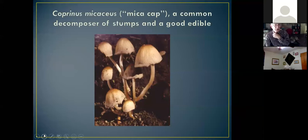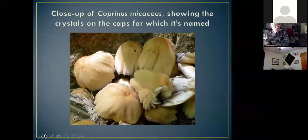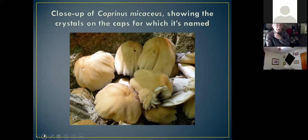Another one in the same genus is a decomposer of stumps and also a good edible — called the microcap because when it's young it has little crystals on it that look like microchips. They too turn black as they age, often making the stump look burned. They're a good edible with a nutty flavor, but you don't usually find that many, so it's hard to make a meal on them. If you look closely, you can see a little bit of granular crystals adhering to the surface before the rain washes them away.